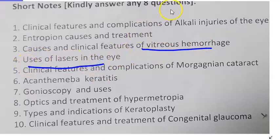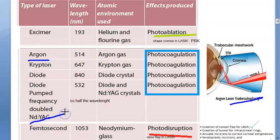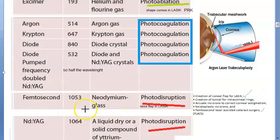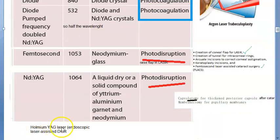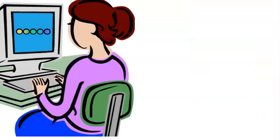Uses of lasers in ophthalmology: list all lasers with wavelength and usage. The excimer laser has the least wavelength and is used in photoablation to shape the cornea in LASIK. Argon laser is used in trabeculoplasty. The double-frequency Nd:YAG laser has specific uses. The femtosecond laser is used for raising a flap in LASIK.